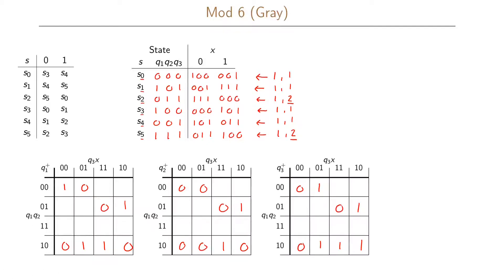For state s5 (111) with input 0 we go to 011, and with input 1 we go to 100. The remaining entries in our Karnaugh maps are don't care terms, because they represent states and inputs that cannot occur.